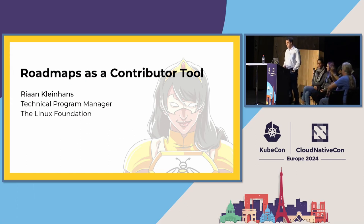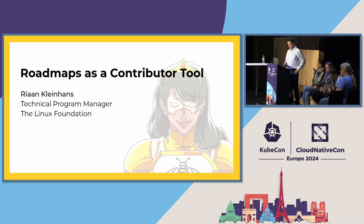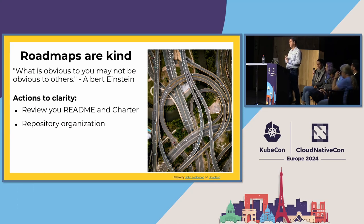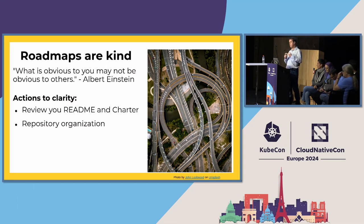Josh talked about how to get contributors to your project, and mostly the first point of contact would be your GitHub repo. As Albert Einstein said — or maybe he didn't — what's obvious to you might not be obvious to others. When people go to your GitHub repo, the first thing they see is your README, and they might look at your charter. Go to your own GitHub repo and look at it as if you've never seen it before. Does the README tell the person what the product is about, when you're meeting, who the leadership is? Are you actually communicating those basic things? Make sure your README does what it's supposed to do.